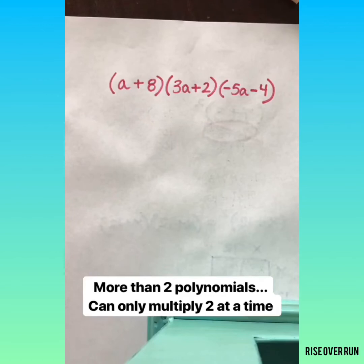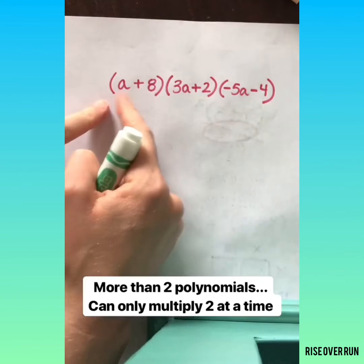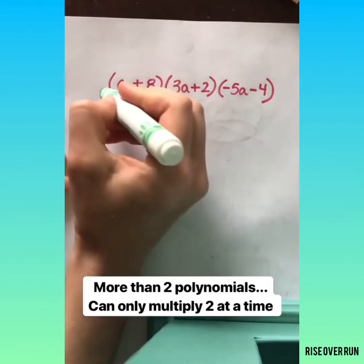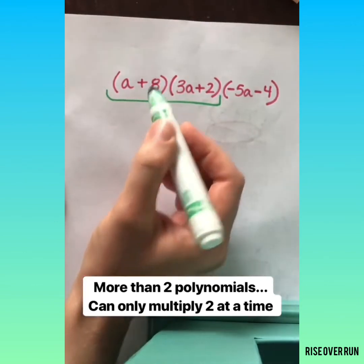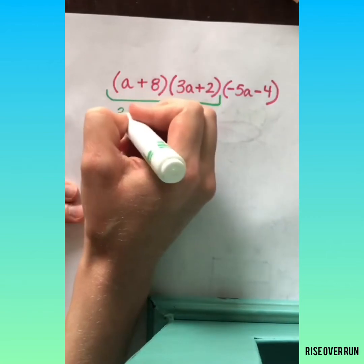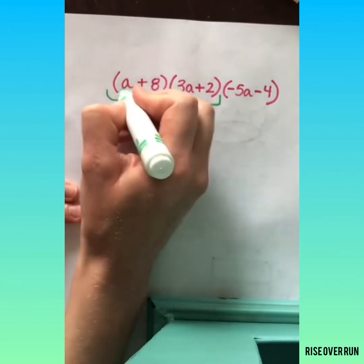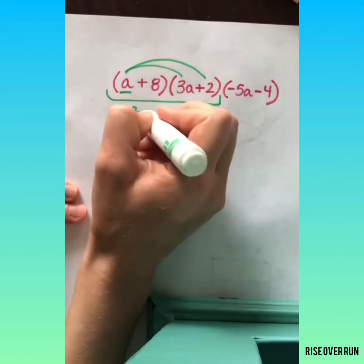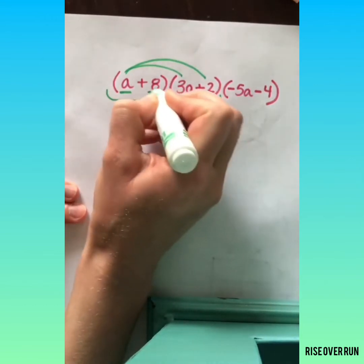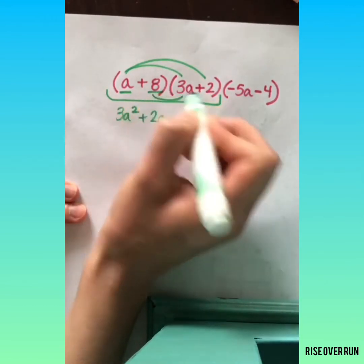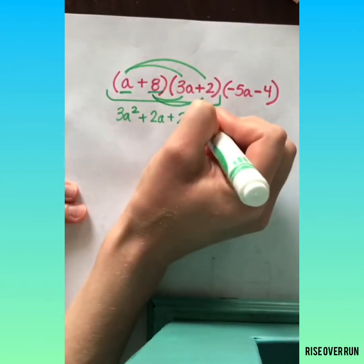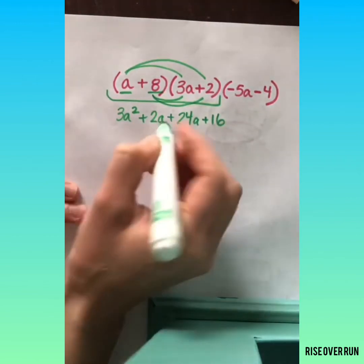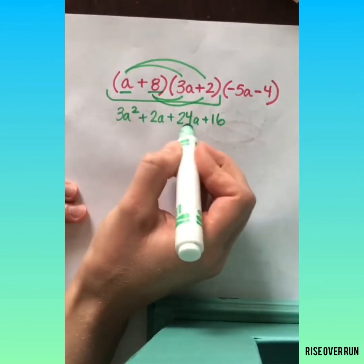What if you have more than two polynomials that you need to multiply? First focus on two polynomials at a time. So let's focus on these first two. And we're going to multiply these. A times 3A is 3A squared. A times 2 is 2A. Now we'll move on to this positive 8. 8 times 3A is 24A. And 8 times 2 is 16.